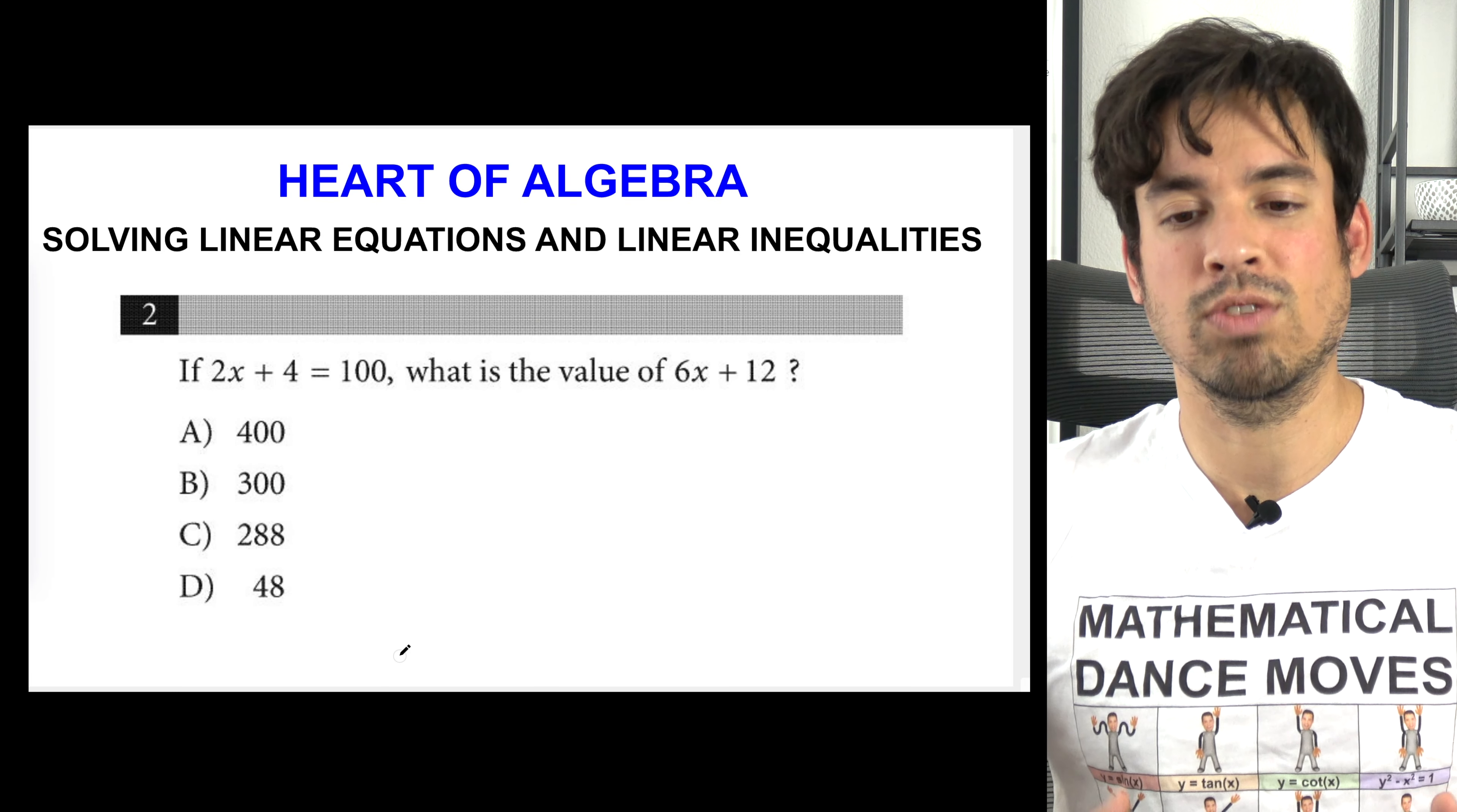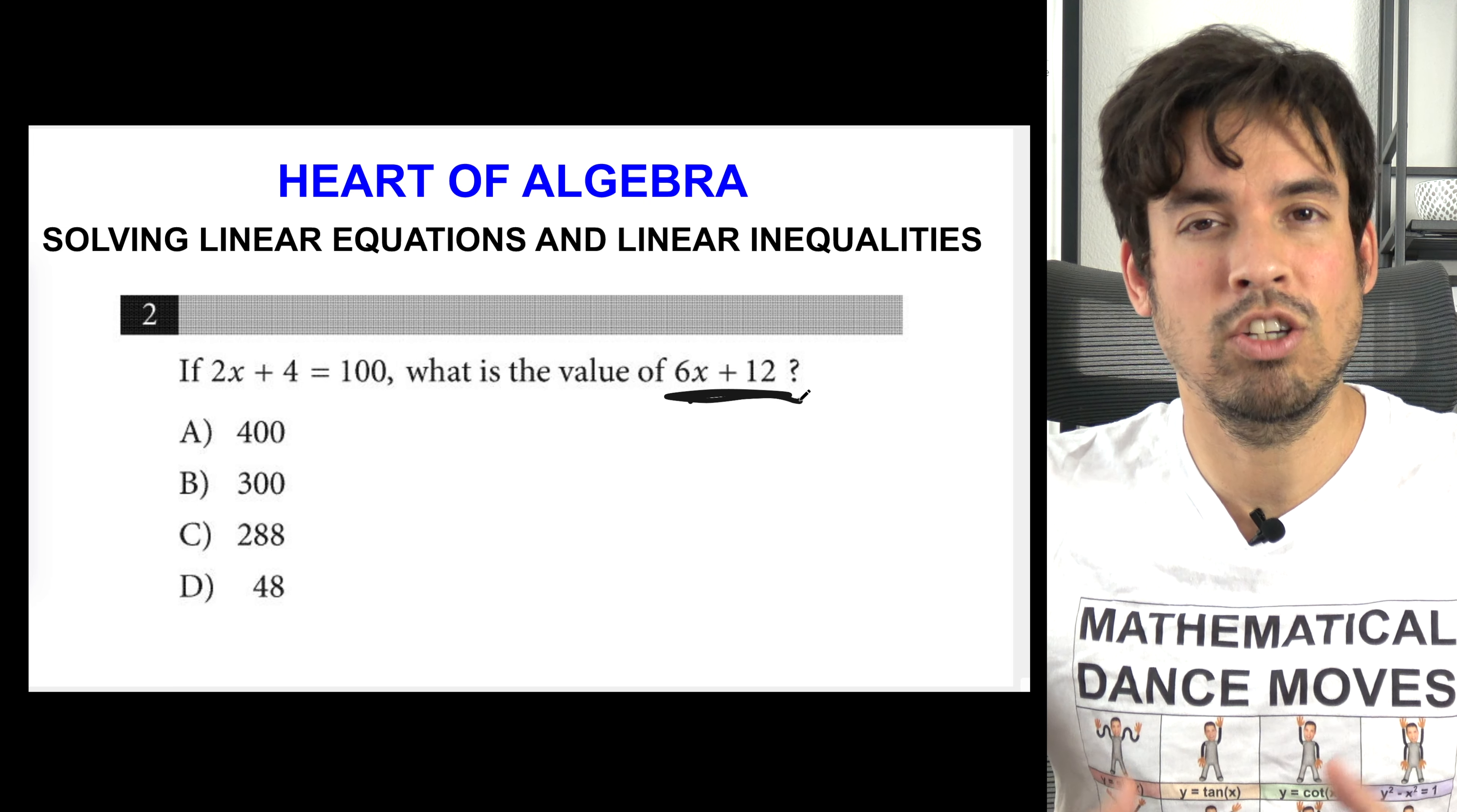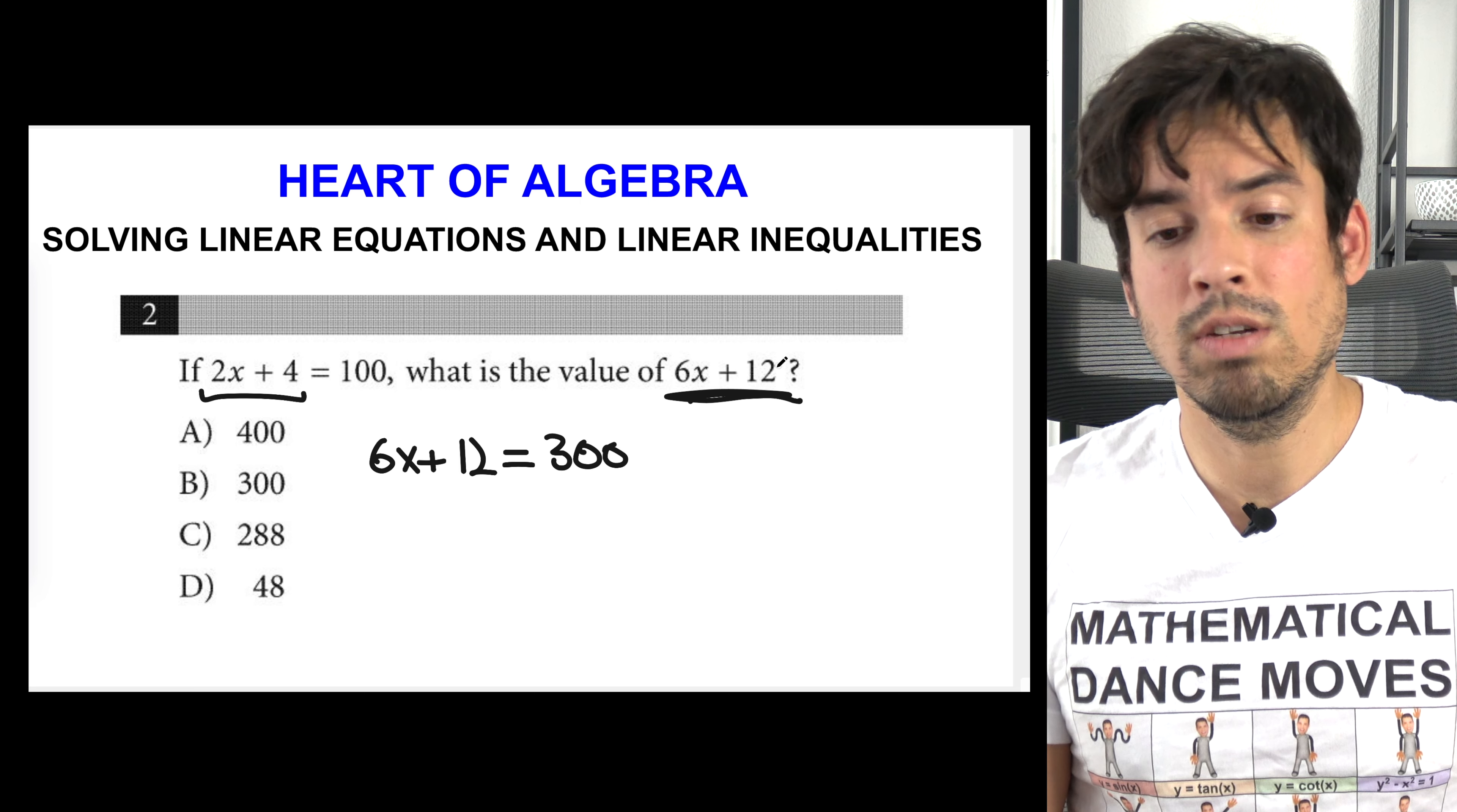In this first question it says 2x plus 4 equals 100, what is the value of 6x plus 12? Now the place where you can lean on your knowledge of the SAT math section in particular is when they ask something like this. They're not asking for x, they're asking for the value of 6x plus 12. A lot of you might think, hey well I wish they would ask for x, this is a trick. To the contrary, this actually makes the problem easier if you catch that, because when you look at this side you recognize that all you got to do to make this equal 6x plus 12 is multiply everything by 3. So then when you multiply the left side by 3 you get 6x plus 12, and then likewise multiply the right side by 3 which gives you 300. You don't need to solve for x, you don't need to plug back in. 300, one and done.